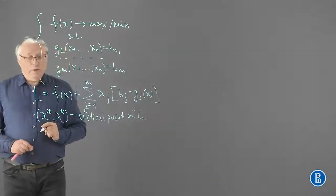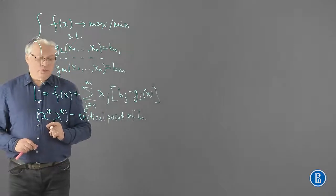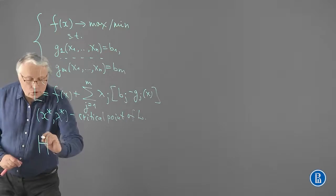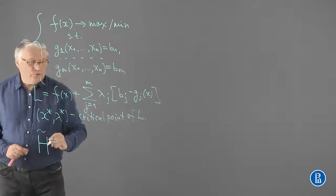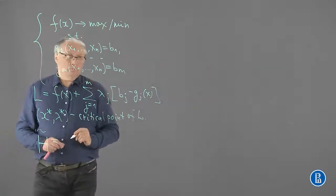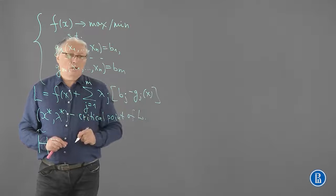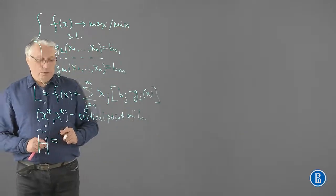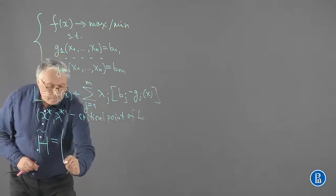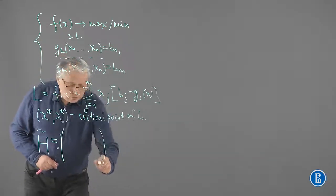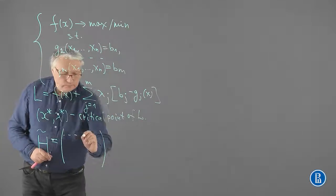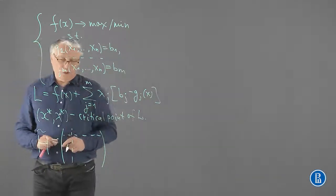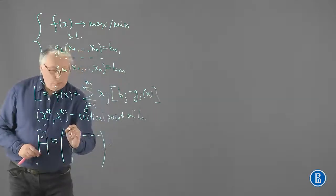We proceed with filling in the bordered Hessian matrix, H tilde, which is a square matrix of the size n plus m times n plus m, which can be split into four blocks. In that left upper corner, we put all zeros.